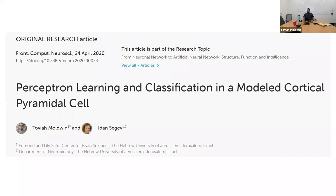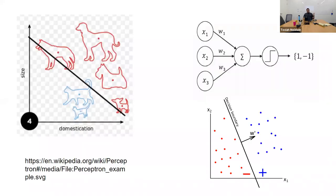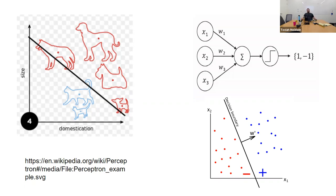The first paper in this dissertation is called 'Perceptron Learning and Classification in a Model Cortical Pyramidal Cell.' The idea is that this linear neuron model can be thought of as a classifier. If you have two classes of objects — say cats and dogs — you characterize them by quantitative features, plot them on an xy plane (usually much higher dimensional), and the perceptron basically draws a line between the two classes, because the equation for the linear neuron is the equation for a hyperplane in high dimensions.